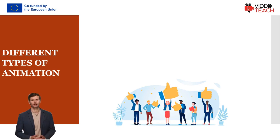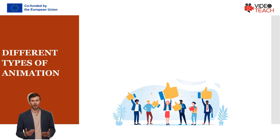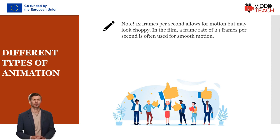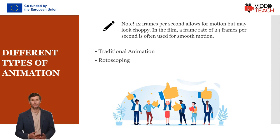Moving characters are usually shot on twos, meaning one image is shown for two frames, totaling 12 drawings per second. Twelve frames per second allows for motion but may look choppy. A frame rate of 24 frames per second is often used for smooth motion.